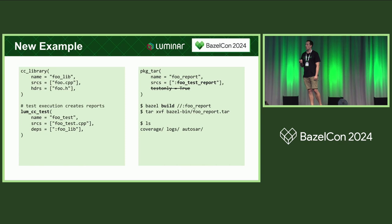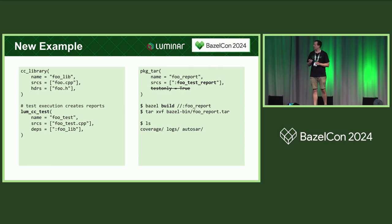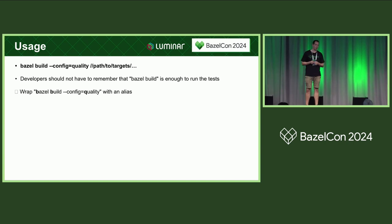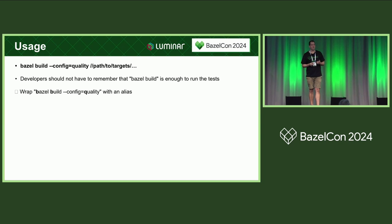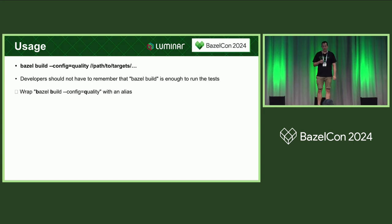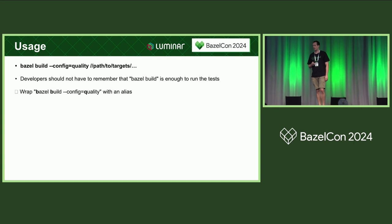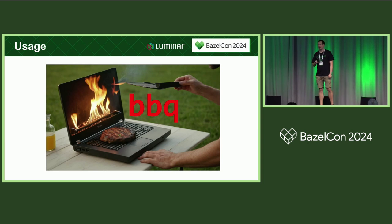To not change the developer workflow too much, we bundled all this in a certain config, which we call the quality config, because it contains all the quality-related aspects for the automotive industry. We also wanted to avoid developers having to remember that in this case Bazel build is enough — we want them to just do Bazel test. So we wrapped all this behind an alias, and everything developers have to remember for this is 'bbq'. With this, I want to thank you for your attention.